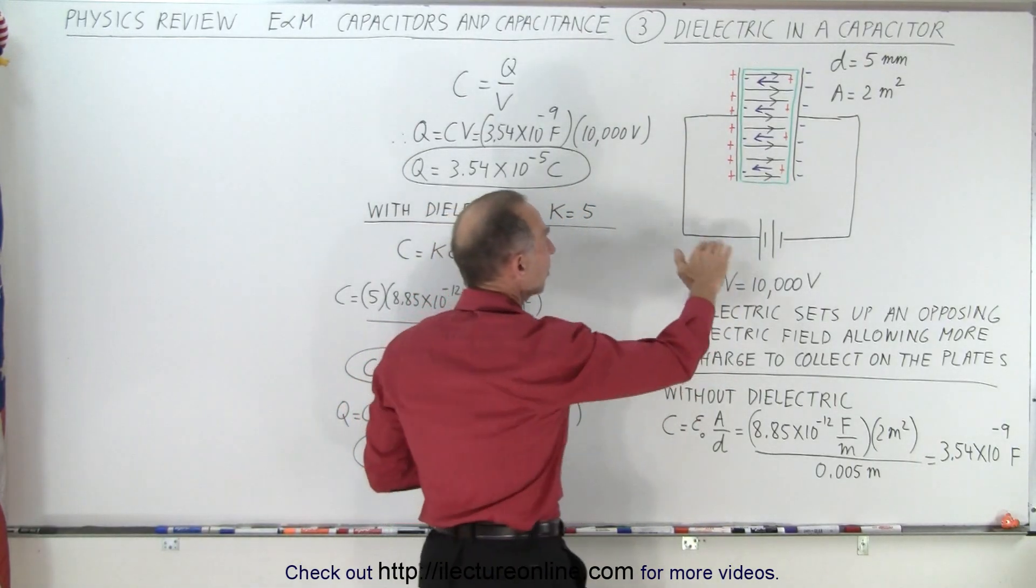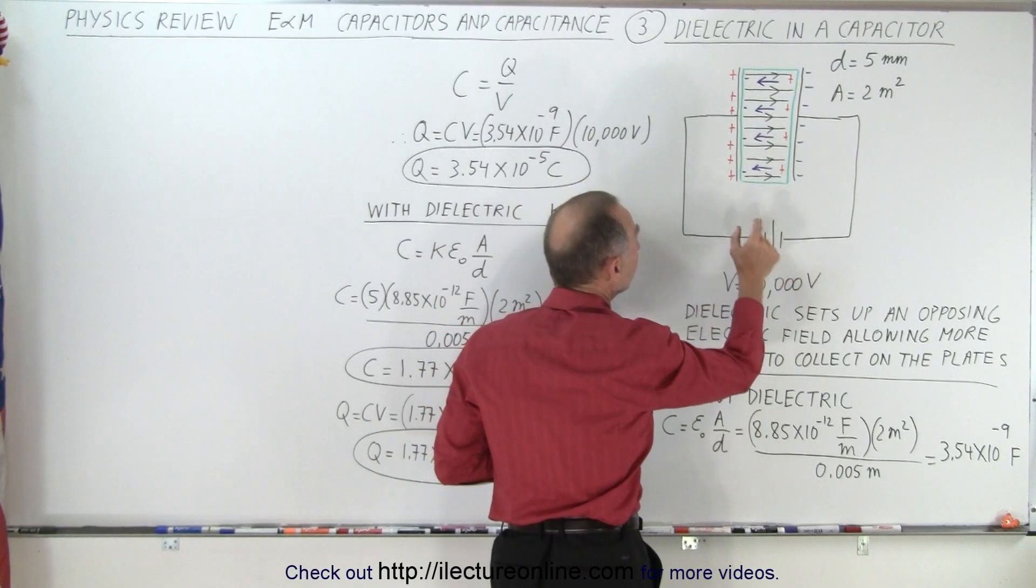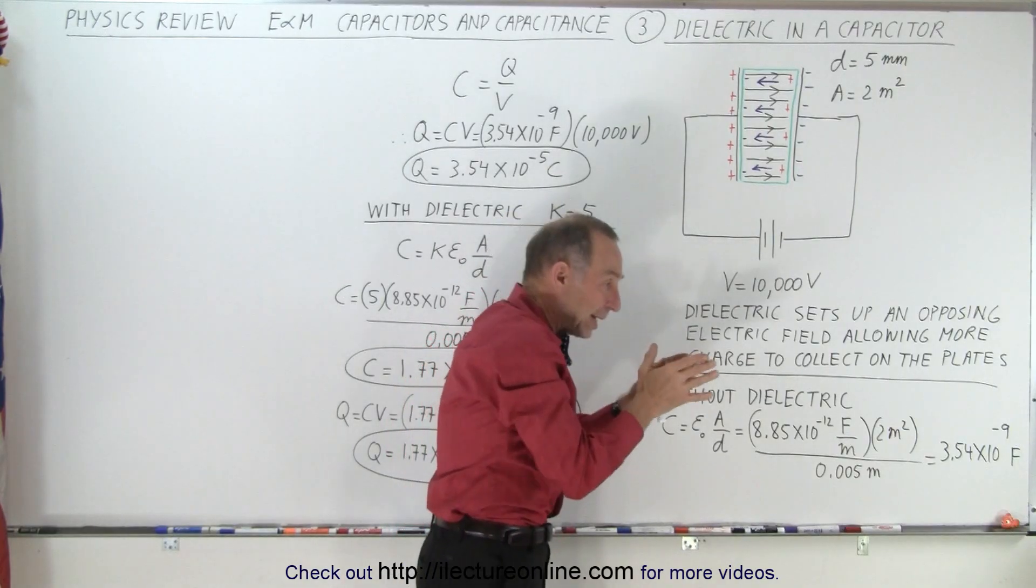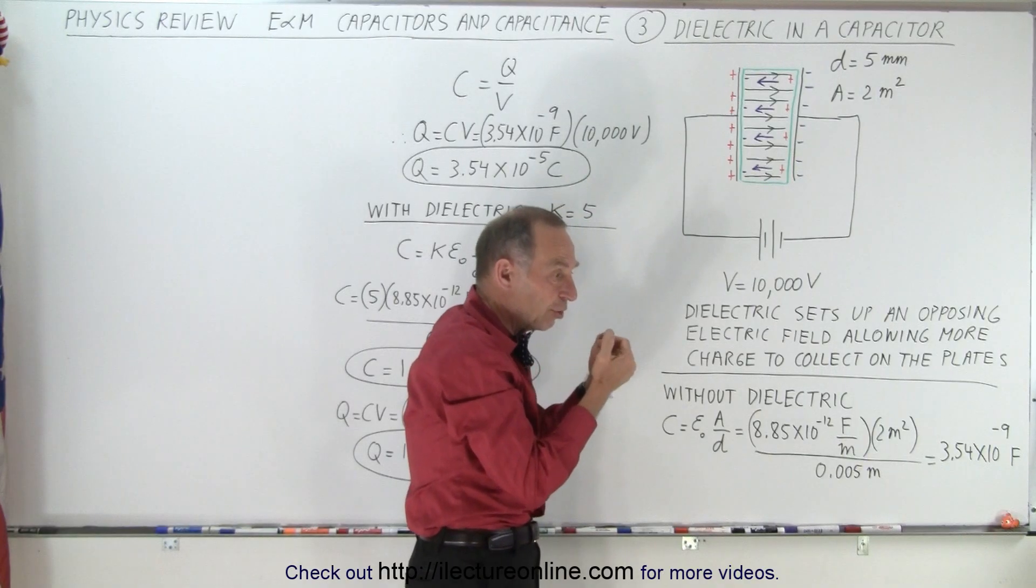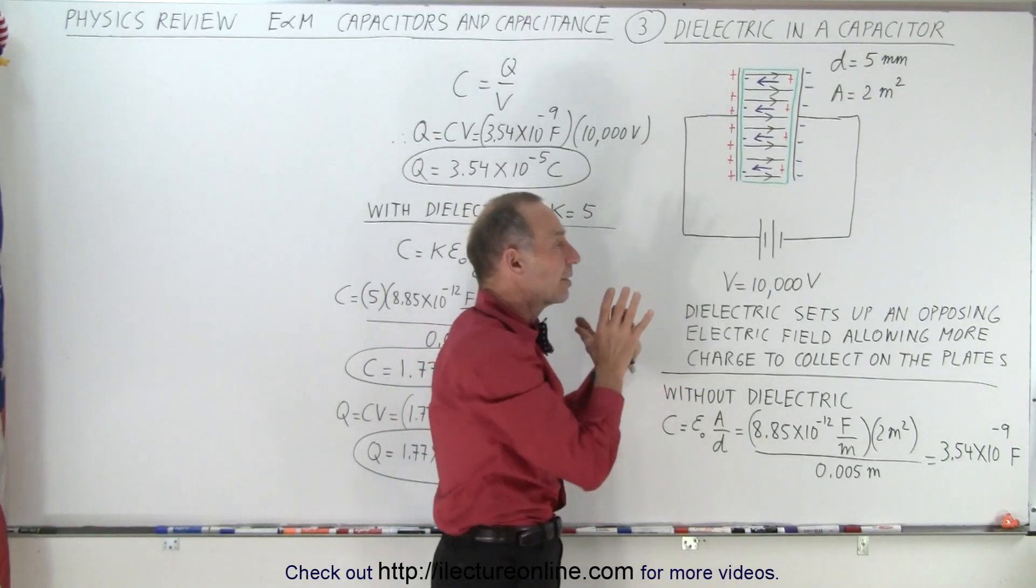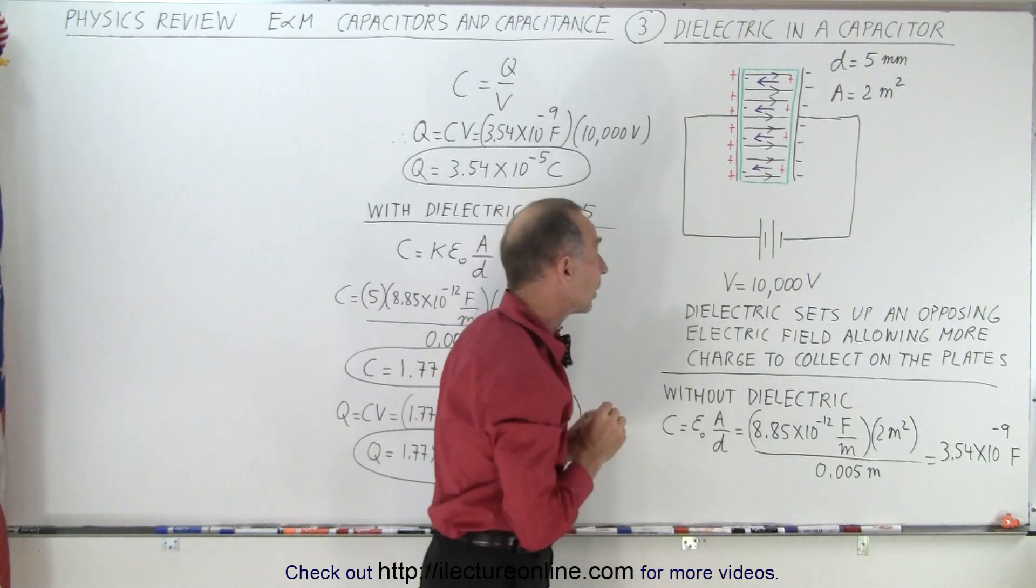What that does is that these positive charges that are being pushed onto the plate by the voltage source, well, without the dielectric, you can only put so many on there until the repulsive forces equal the force of the voltage supply trying to push them on there. So once those forces are balanced, you can't push additional charges onto the plate.